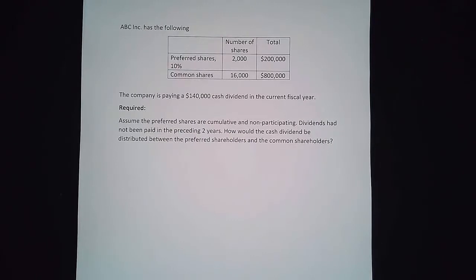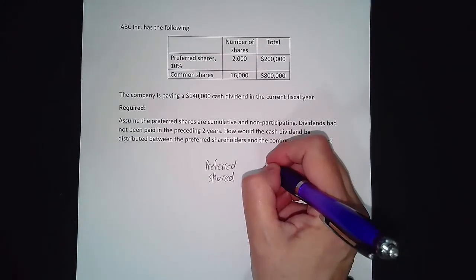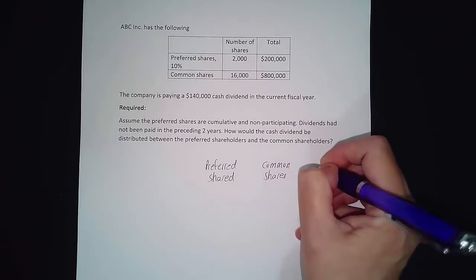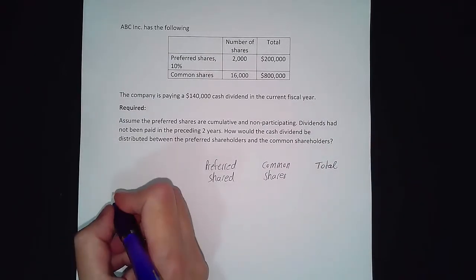So how will dividends be distributed in the current year? I'm just going to make a chart with a column heading for preferred shares, one for common shares, one for the total, and then a description.